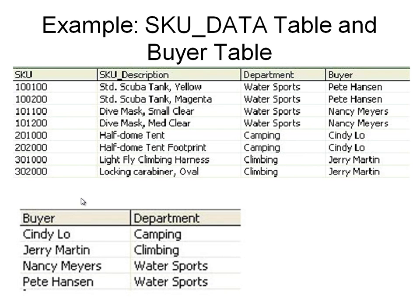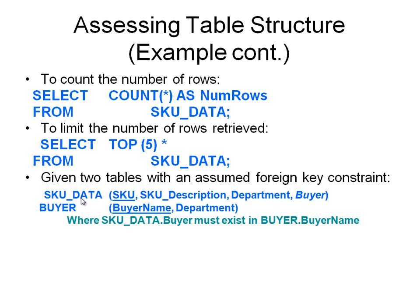Let's look at the example from Chapter 3, the SKU data table and the buyer table. Assume we don't know how many rows are in the SKU data table and we would like to get the count of rows, saved in a column called numRows. To count the number of rows, we use the SELECT statement with the COUNT function and save the results in a new column called numRows. We can limit the number of rows displayed to 5 using the TOP function. By looking at the tables and columns, we can identify the functional dependencies, primary key, and foreign key.